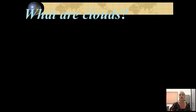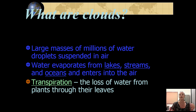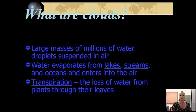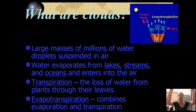What are clouds? Well, clouds are large masses — millions of water droplets that are suspended or hang in the air. Water evaporates from lakes and streams and oceans and it enters the air. Transpiration is the loss of water from plants through their leaves, and evapotranspiration is the combined processes of evaporation and transpiration. So it's basically the loss of water from leaves on trees and plants, plus water evaporating up from the oceans — all of that enters the sky.